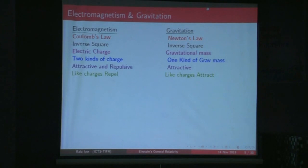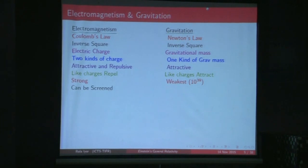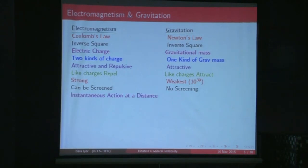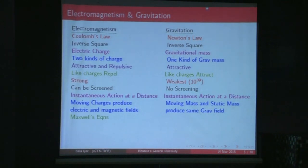Like charges repel in electrostatics, but like masses attract in gravity. The electrostatic force is much, much stronger — about 10 to the power 39 times stronger than gravity. You can screen an electrostatic force because there are two kinds of charges, whereas because there is only one kind of mass you cannot screen gravitation. Both Coulomb's law and Newton's law can be described as instantaneous action at a distance. Moving charges produce not only electric fields but also magnetic fields, whereas a moving mass and a static mass produce the same gravitational field in Newtonian theory.